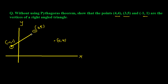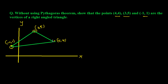Now we need to show that these are actually the vertices of a right angle triangle. To be the vertices of a right angle triangle, we need to show that at least one angle is 90 degrees. If we can show one angle is 90 degrees, then we can easily say that this is a right angle triangle.